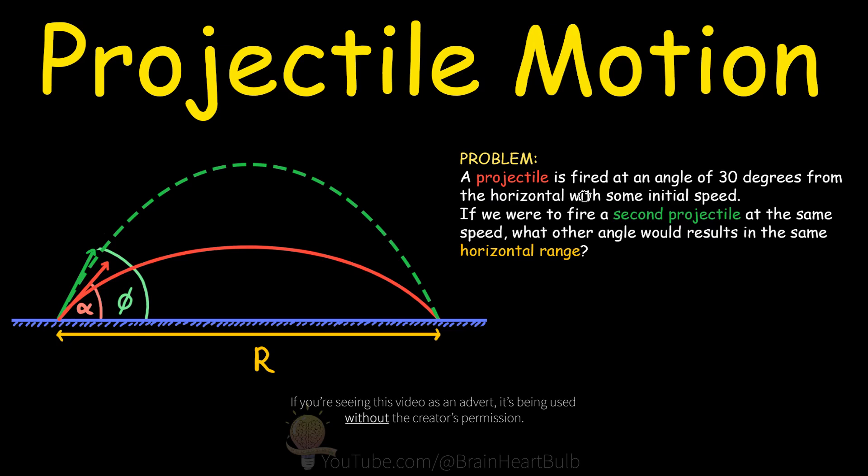A projectile is fired at an angle of 30 degrees from the horizontal with some initial speed. If we were to fire a second projectile at the same speed, what other angle would result in the same horizontal range?